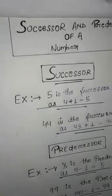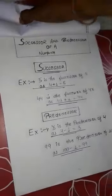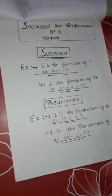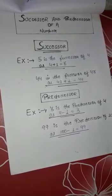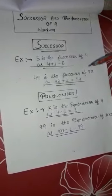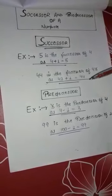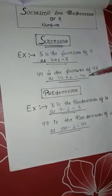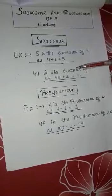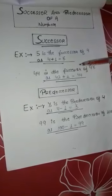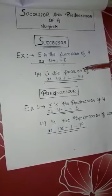Now, there is one word: successor and predecessor. Successor meaning the number which comes just after the given number. It is obtained by adding 1 to the given number. The number 1 more than the given number is called successor.